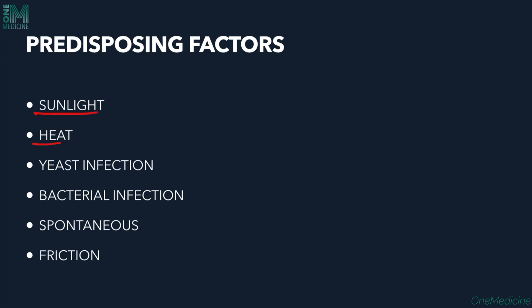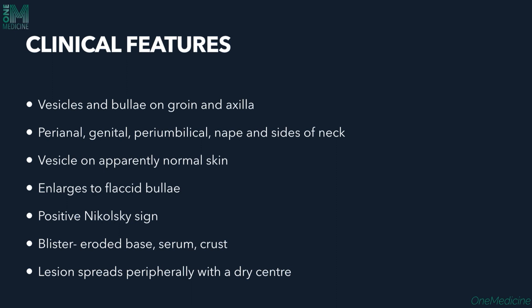Predisposing factors for Hailey-Hailey disease include sunlight, heat, yeast infections, bacterial infections, and the disease can also occur spontaneously. Friction can also trigger the condition — friction-induced blisters, most commonly seen in epidermolysis bullosa, can also occur in Hailey-Hailey disease.